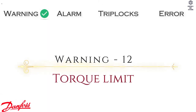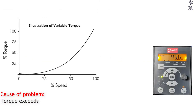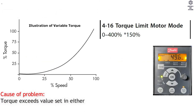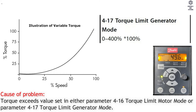Warning 12: Torque Limit. Cause of Problem — torque exceeds the value set in either Parameter 416 Torque Limit Motor Mode or Parameter 417 Torque Limit Generator Mode.